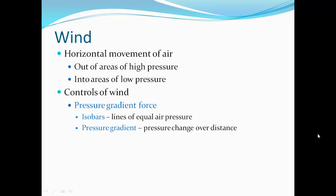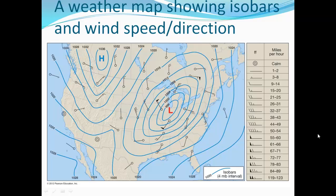Pressure gradient is the pressure change over distance. The closer those isobar lines are together, the steeper that gradient is. On a weather map showing isobars, where the lines are far apart there's a very shallow gradient and winds are very slow or absent. The heavier winds are where the isobars are close together.